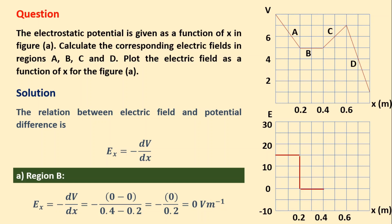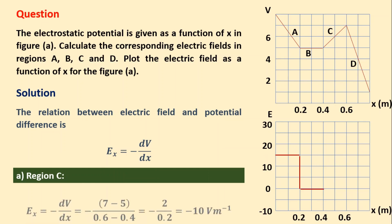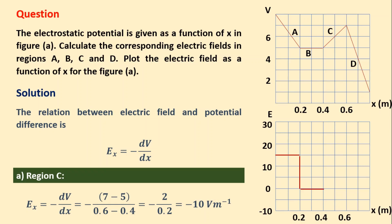Let us go for region C, where the voltage increases from 5 volts to 7 volts. So the change in voltage will be 7 minus 5, which is 2. So E_x equals minus dV by dx, which is minus 2 divided by 0.2, equal to minus 10 volts per meter. Let us represent this electric field in the region 0.4 meters to 0.6 meters in the graph.